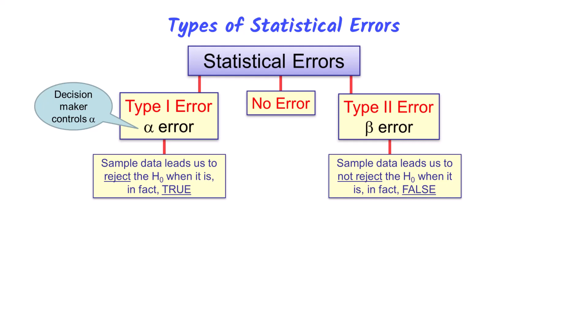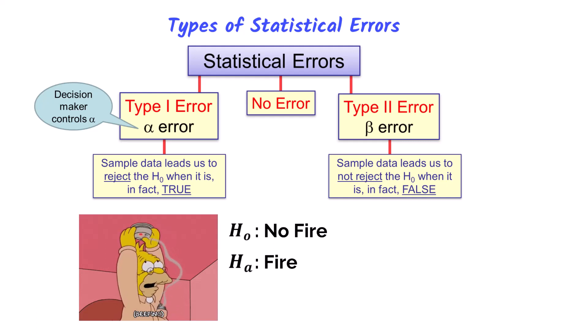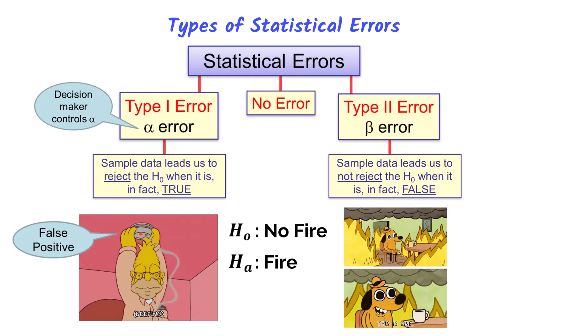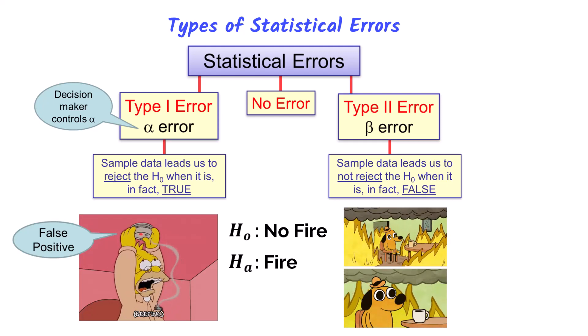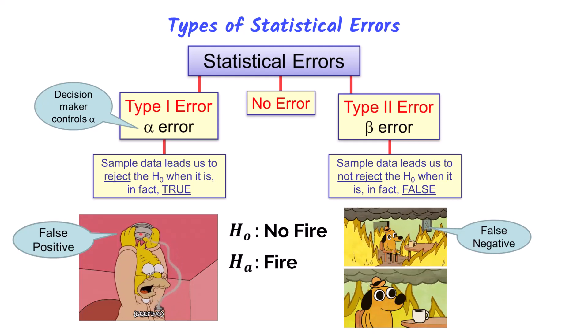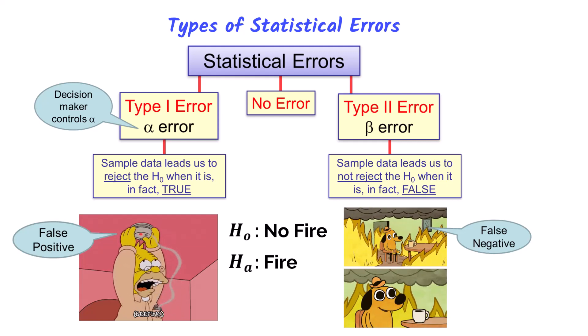An analogy might be helpful to understand type 1 and type 2 errors. Imagine the null hypothesis is that there is no fire in the house, and the alternative hypothesis is that there is a fire. Now imagine the smoke alarm going off, but there is no fire — this is a type 1 error, a false positive, because the alarm indicated a fire that wasn't there. A type 2 error is when there is a fire in the house but the smoke alarm does not go off — a false negative, because we think everything is fine even though it is not. Many statisticians argue that you should never use the phrase 'accept the null hypothesis'; instead, we say we do not reject the null hypothesis.